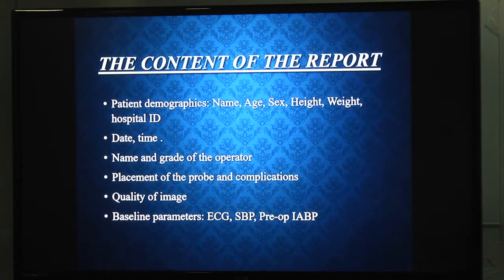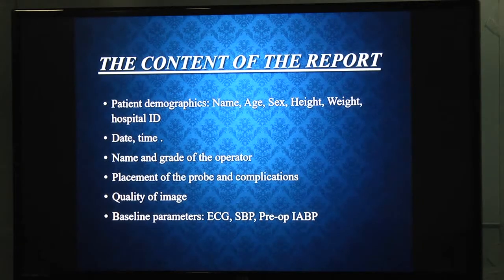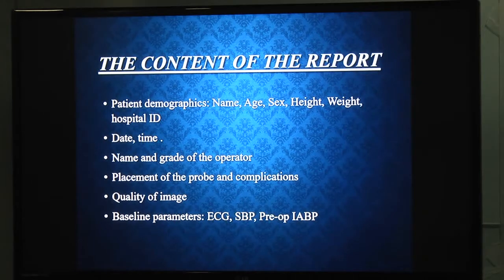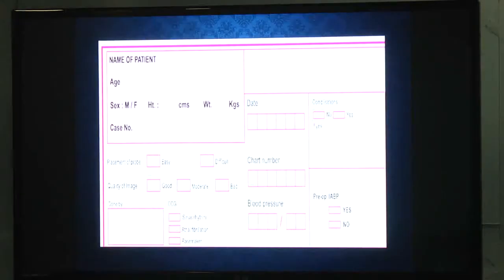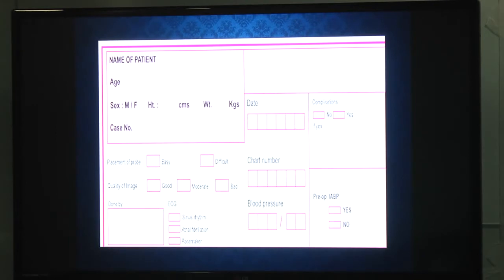The content of the report begins with patient demographics: name, age, sex, height, weight, and hospital ID. Date and time of reporting should be noted, along with the name and grade of the operator. Probe placement and associated complications should be reported at the beginning. Image quality and baseline parameters such as ECG, systolic blood pressure, pre-op status, and IBP insertion if present should also be recorded.